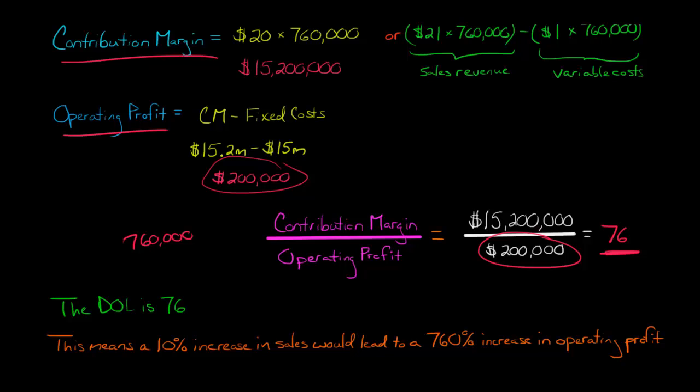If the sales were actually 10% higher than the 760,000 that we were thinking we're going to have, if there was a 10% increase in sales, how would that change our operating profit? And what we do is we multiply the percentage increase in sales by the degree of operating leverage. And that will tell you the percentage increase in the operating profit.